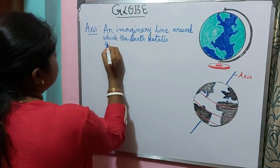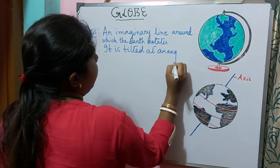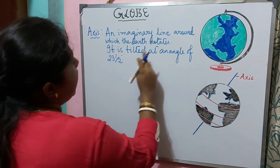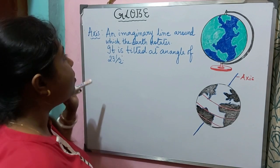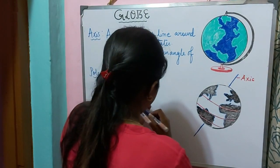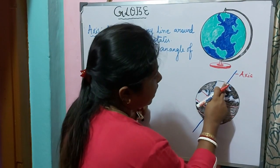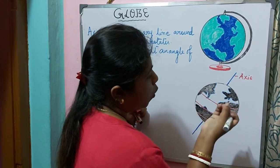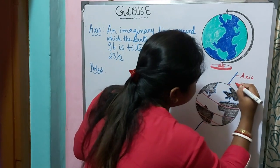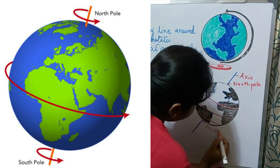You can see that the axis is not located at 90 degrees — it is tilted at an angle of 23 and a half degrees. Now let us understand about the poles. What are poles? You can see these two end points where the axis is actually touching the surface of the globe or the Earth. We call these two end points as poles. To the north we have the North Pole, and to the south we have the South Pole.